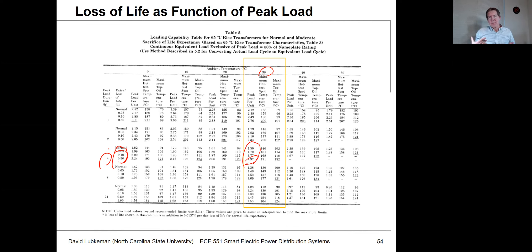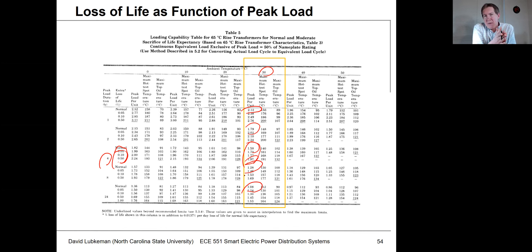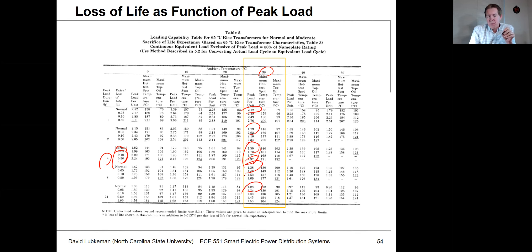The allowable overload values depend on duration — for one hour you could overload to 2.12 per unit; for two hours it's less; for four hours less still; for eight hours it's 1.28 per unit; and for 24 hours it's 1.08 per unit. If you keep it for a short period, it doesn't heat up high enough long enough to cause damage. But the more time you're at an overloading condition, the more risk you're taking. This table attempts to quantify that for you.